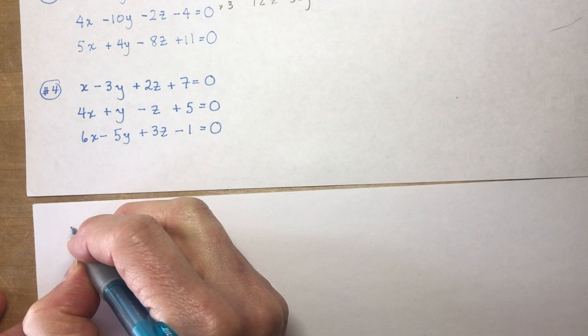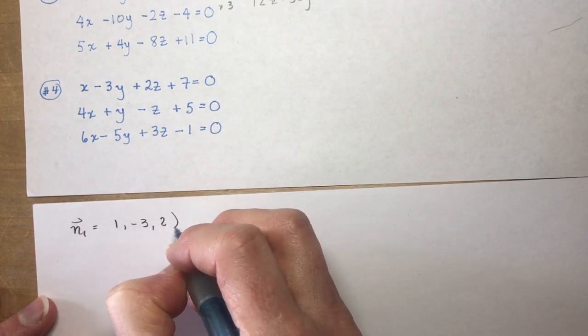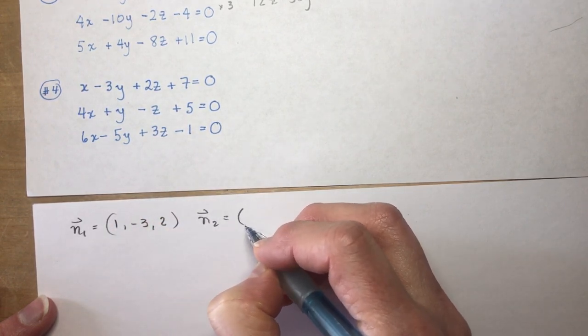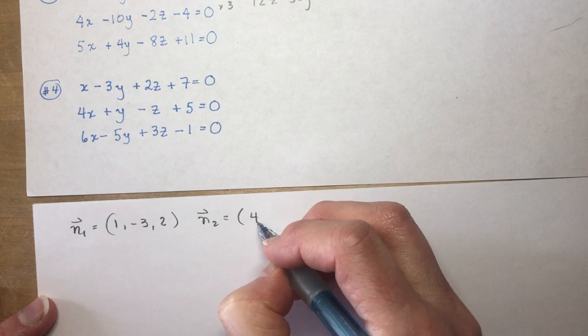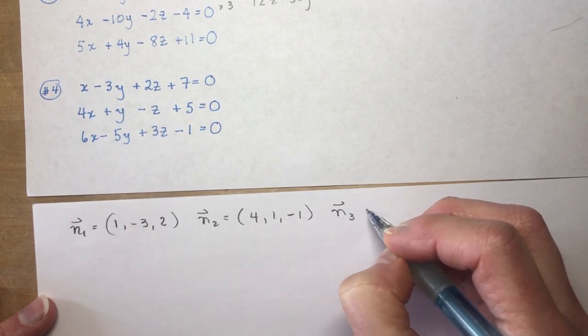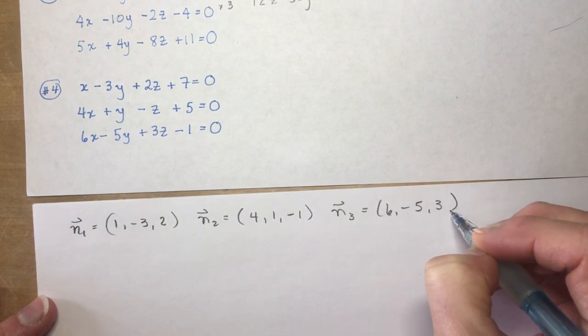So, normal 1, normal 1 is going to be 1, minus 3, and 2. Normal 2, so all I'm doing is, I'm just finding those ABC values. So, 4, 1, minus 1, and normal 3 is going to be 6, minus 5, and 3.